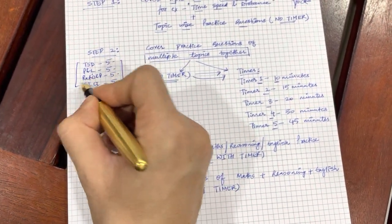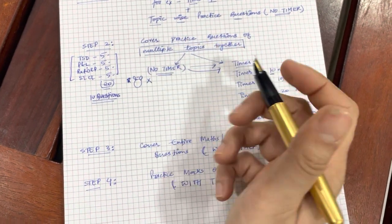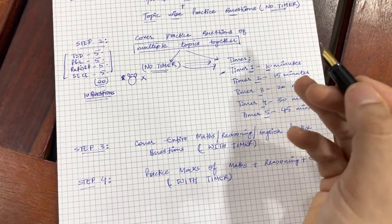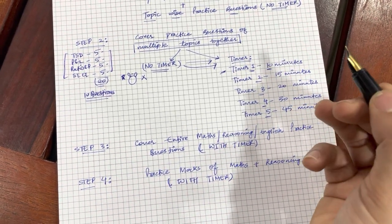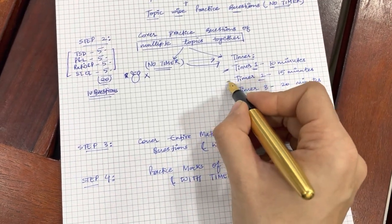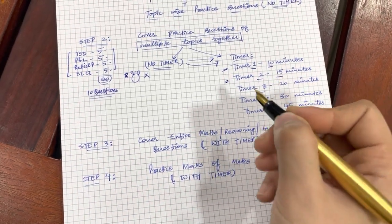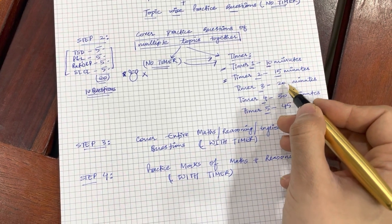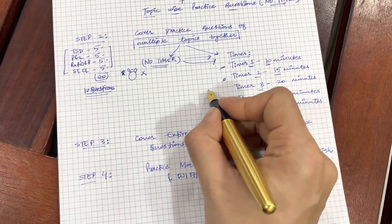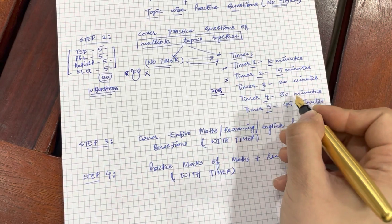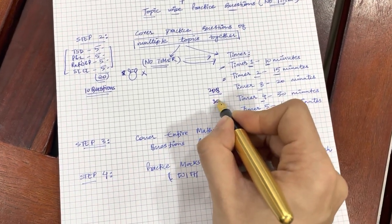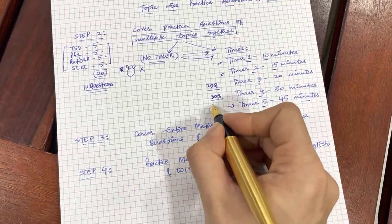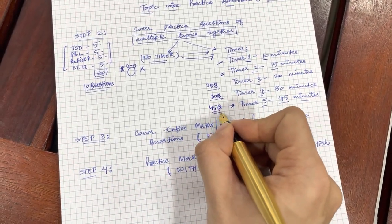I would recommend taking multiple topics because now you are already in step 2. You start with timer number 1 of 10 minutes. You do it for 2, 3 days or 3, 4 times in a single day and then you increase your time. You jump on to a 15 minute timer. Similarly, when you start feeling comfortable in this, you jump to a 20 minute timer, 20 questions. Then you jump to a 30 minute timer, 30 questions. Eventually, you should be jumping towards or going towards a 45 minute timer with 45 questions.